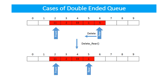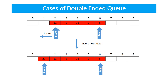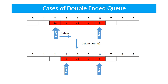In the next example, if you want to delete an element at the rear end, just decrement the rear variable. In the next example, if you want to insert 21 at the front end, just decrement the front variable to the left. In the next example, if you want to delete at the front end, just increment the front variable to the right.